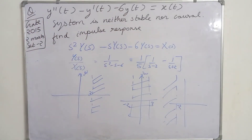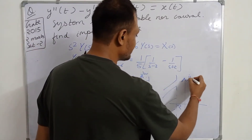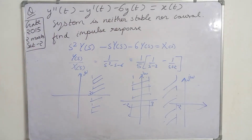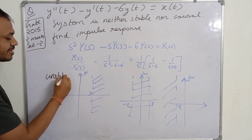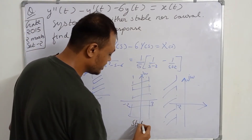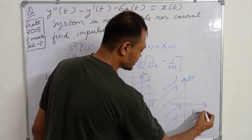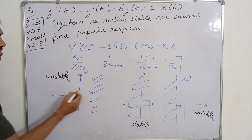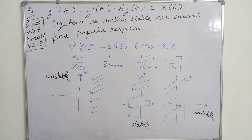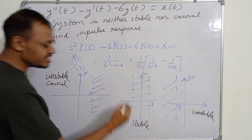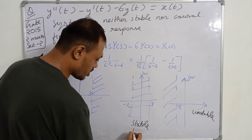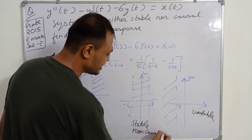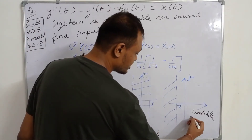When the ROC includes the j-omega axis, the system is stable. For the first case (ROC right of s=3), the ROC does not include the j-omega axis, so the system is unstable. For the second case (ROC between the poles), the ROC includes the j-omega axis, so the system is stable. For the third case (ROC left of s=-2), the ROC does not include the j-omega axis, so the system is unstable. Regarding causality: ROC right of the rightmost pole means the system is causal; ROC between the poles or left of the leftmost pole means the system is non-causal.